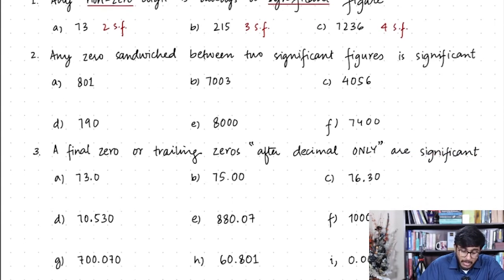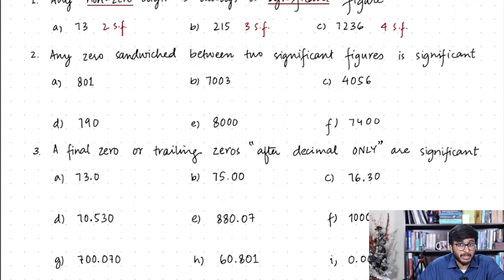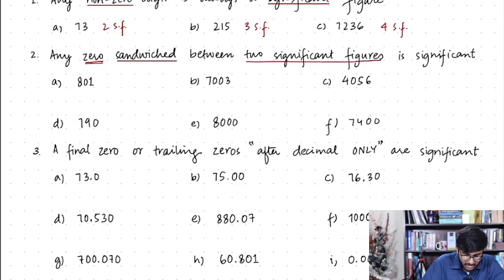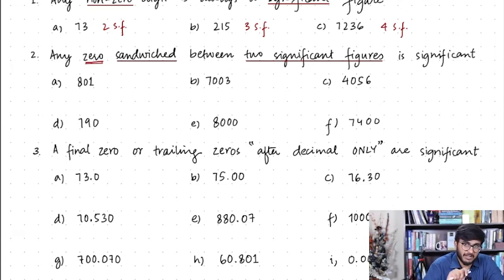The problem comes when there is a zero in your number. Sometimes this zero is significant and sometimes it's not. The second rule gives us insight into whether a zero is going to be significant or not. Any zero sandwiched between two significant figures is significant — that is, if there is a zero between two significant figures, that zero is also going to be significant.